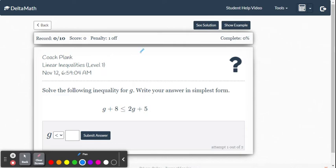This video is an example for solving linear inequalities level 1 within the Delta Math system. We're given the inequality g plus 8 is less than or equal to 2g plus 5.